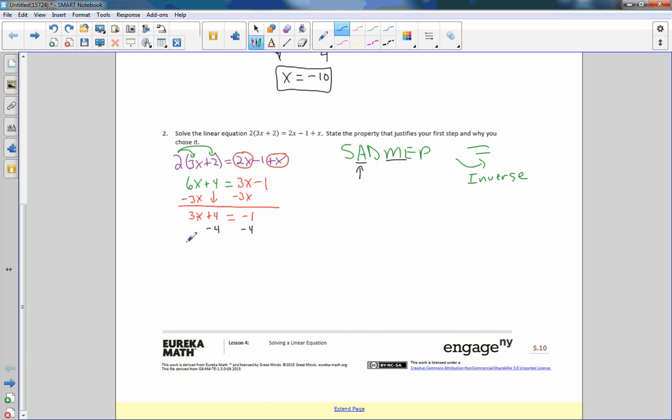Now we're going to deal with the multiplication. The inverse of multiplication is division, so I will divide by 3. 3's cancel, and x = -5/3.